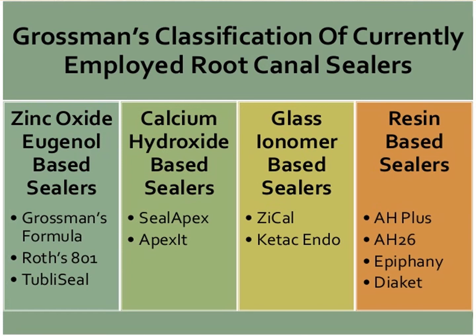Grossman has classified the currently employed root canal sealers into four categories. First, zinc oxide eugenol-based sealers — examples include Grossman's formula sealer, Roth sealer, and Tubli-Seal. The second category is calcium hydroxide-based sealers, with examples Sealapex and Apexit. The third is glass ionomer-based sealers, which include Ketac-Endo and GC Fuji Endo. And fourth are the resin-based sealers — most commonly used nowadays are AH Plus, AH26, Epiphany, and Diaket.